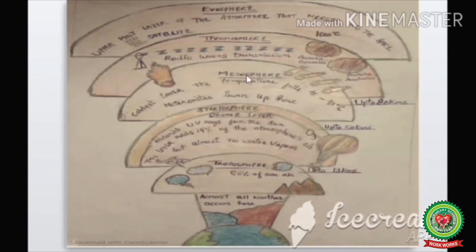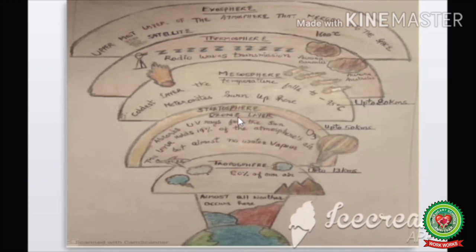After the stratosphere, the next layer is the mesosphere. It is the coldest layer because after the ozone layer, temperatures start decreasing. In the stratosphere, temperature is high due to the ozone layer trapping the sun's heat, but in the mesosphere, the temperature falls to minus 95 degrees Celsius. It extends up to a height of 80 kilometers.